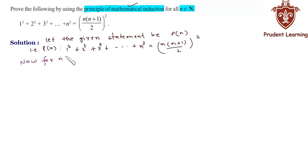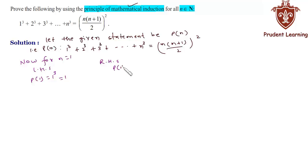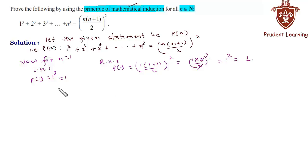For n = 1, on the left hand side we have P(1) = 1³, that is 1 itself. On the right hand side, substituting n = 1 into n(n+1)/2 whole square, we get 1 × (1+1)/2 whole square, which equals (1 × 2/2)² = 1² = 1. Therefore P(1) is true for the given statement.